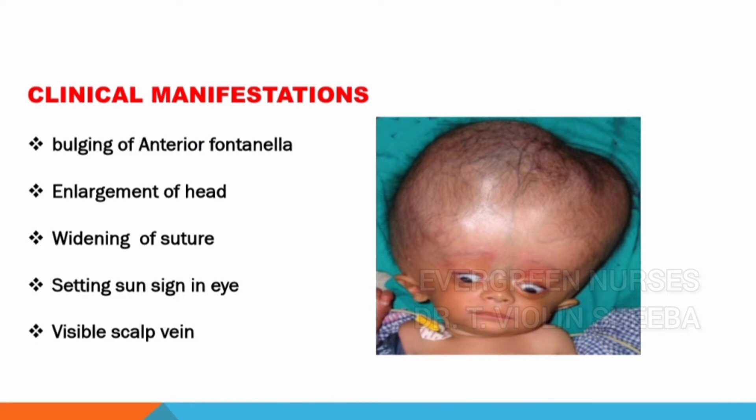The clinical manifestations of hydrocephalus include bulging of the anterior fontanelle, enlargement of the head, widening of the sutures, sunset eye sign, and visible scalp veins — all due to increased intracranial pressure. The child will have difficulty in sucking and feeding, high-pitched cry, restlessness, irritability, vomiting, and headache, mainly due to increased intracranial pressure. Some children also develop seizure disorder.